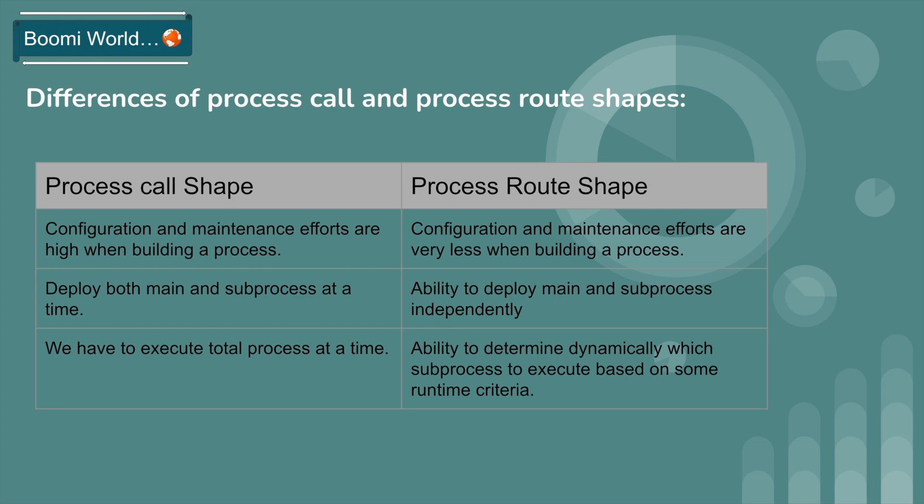If you configure process call shape on any process, we have to execute the total process at a time. If you configure process route shape, we can determine dynamically which sub process to execute based on some runtime criteria. So these are the main differences between process call shape and process route shape.